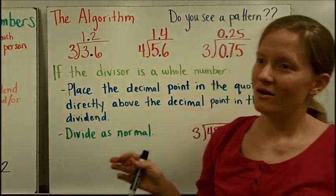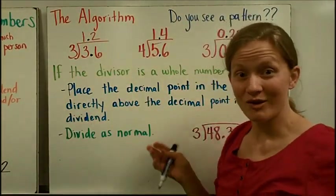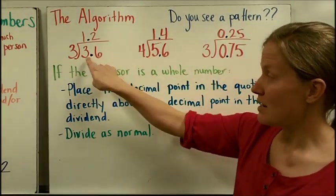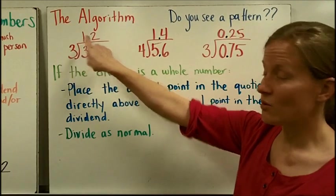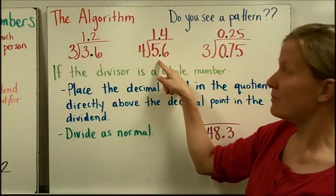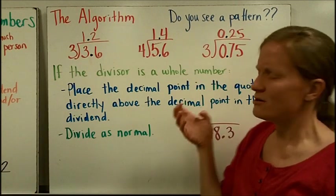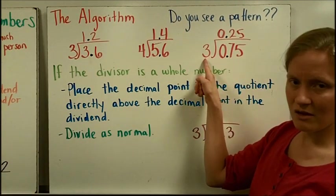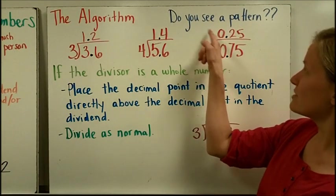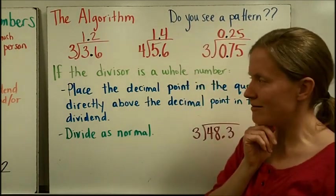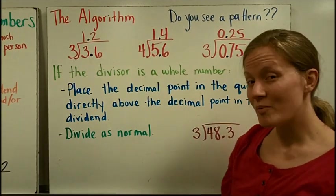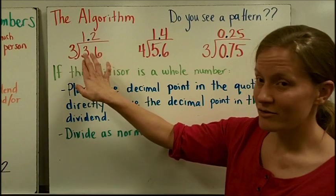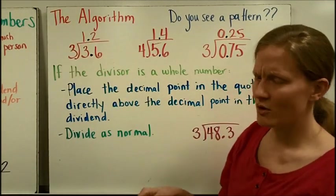So of course you want to know, I don't want to have to do with models all the time, what's the algorithm? So here are the two problems that we already did. 3.6 divided by 3 gave us 1.2. And here's the second problem that we did. Here's a third problem that you could have done in your head. Think about it, 75 cents divided into 3 equal groups would be 25 cents or just the quarters. So do you see a pattern? That's what I'm wondering here. I hope that you see that this is just like regular division. 36 divided by 3 would make 12. 56 divided by 4 would make 14.